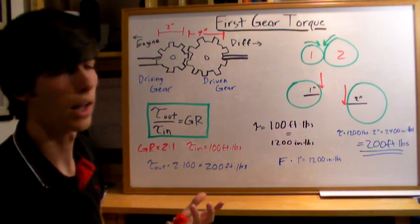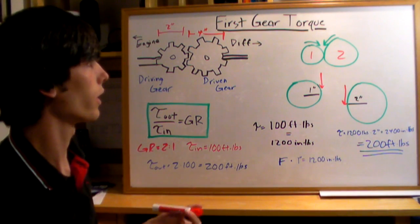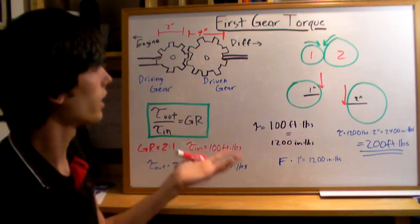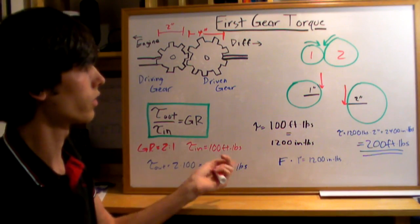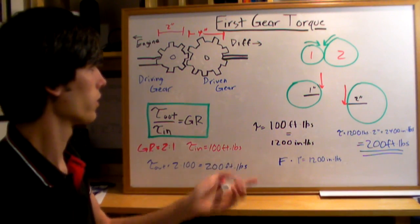That's why you're going to have greater acceleration than if you're in second gear. Say second gear had a ratio of 1.5, well then you'd only have 150 foot-pounds going to the differential.